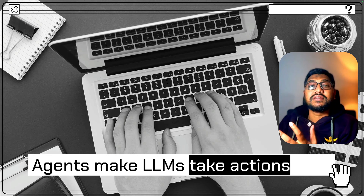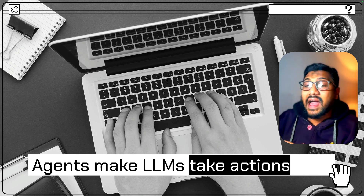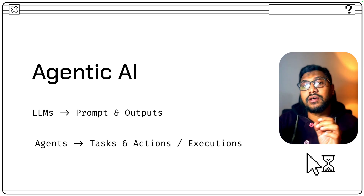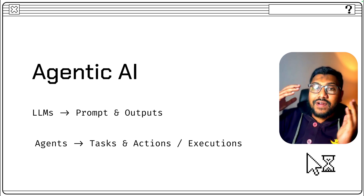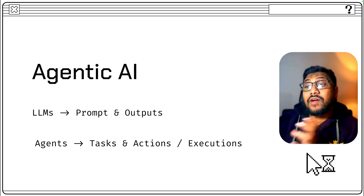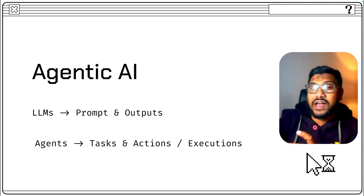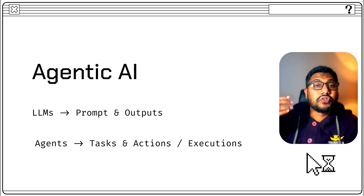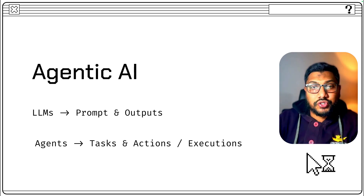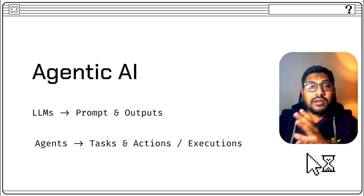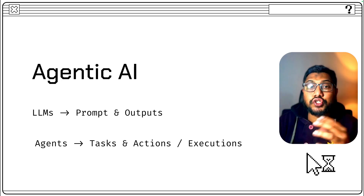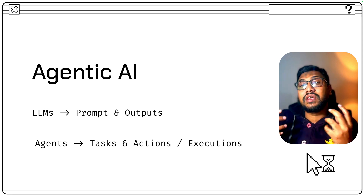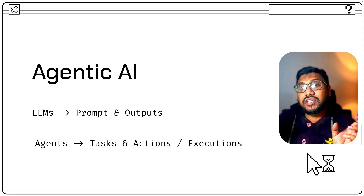According to me, agents are the things that make LLMs take actions. If you were to think about LLMs, you would think in terms of prompts and outputs. But if you were to translate that thought into a new paradigm, you have to start thinking about tasks and actions. So agents are supposed to get some task and then take actions or executions — instead of giving a prompt and getting an output, an autonomous agent should get tasks and then based on that take action.